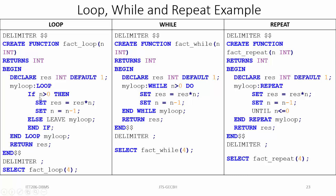Since loop has no termination condition, we write it with the help of an IF statement. If n is greater than zero, then we perform the operation: result = result * n, and then decrement n by one (set n = n - 1). If n is greater than zero those statements execute, otherwise we leave the loop using 'else leave my_loop'. Then we close with end if semicolon.